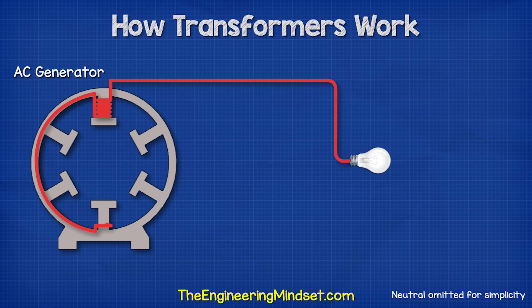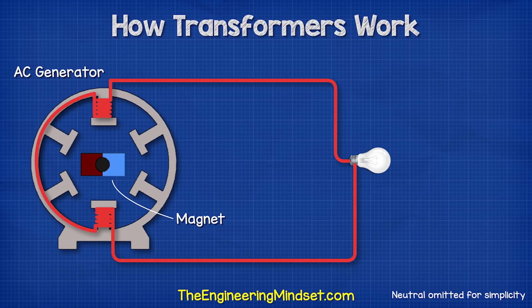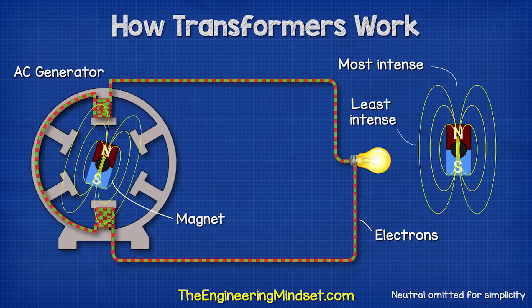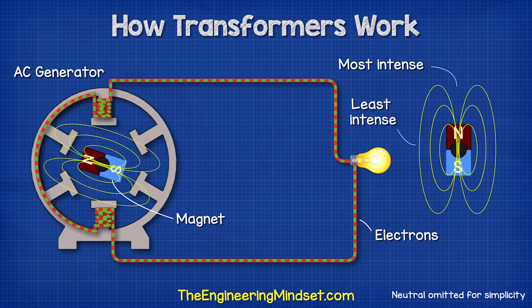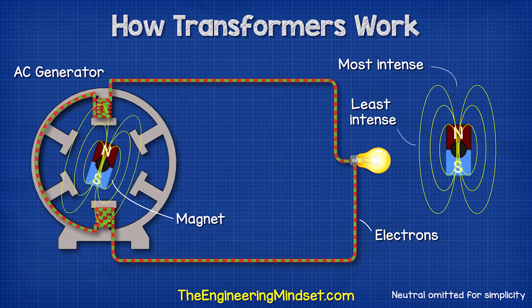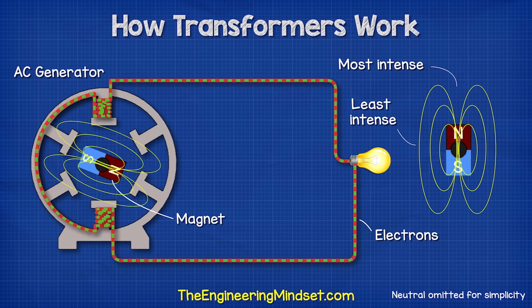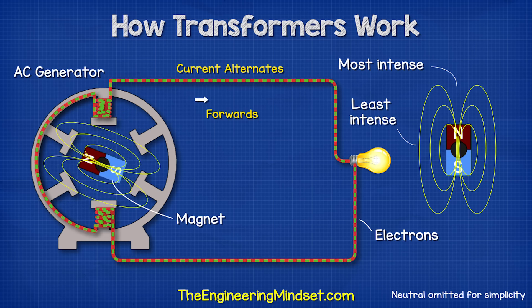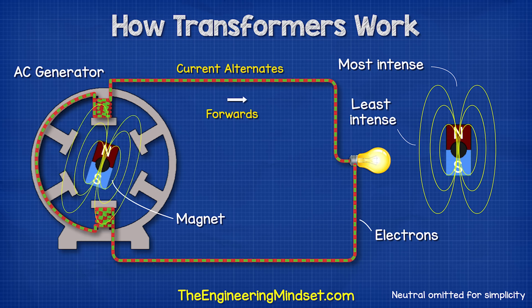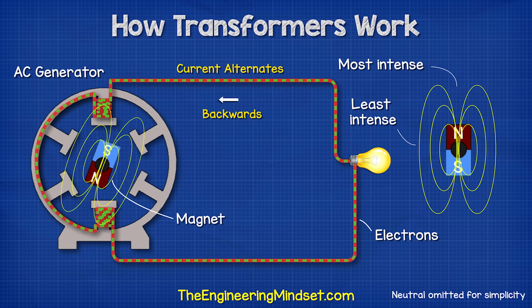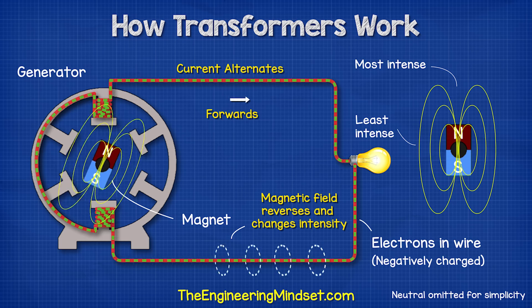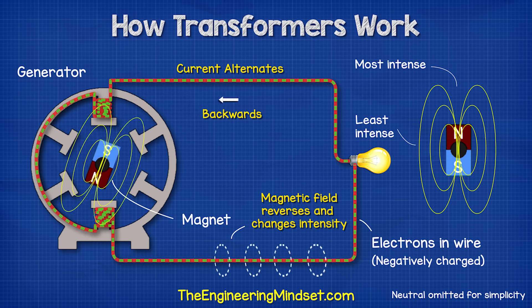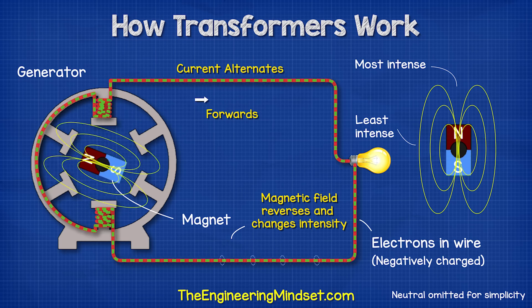When we connect an AC generator to a closed loop of wire, the magnetic field inside the generator is going to basically push and pull the electrons in the wire so that they constantly alternate direction between moving forwards and backwards.